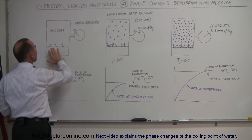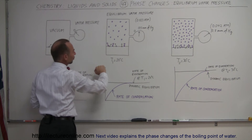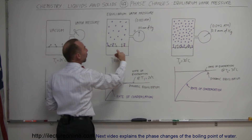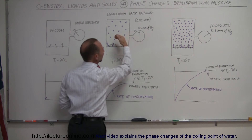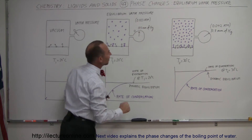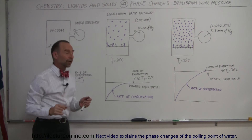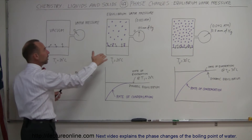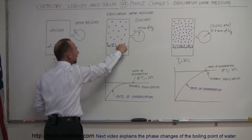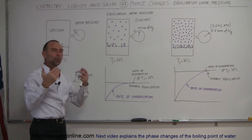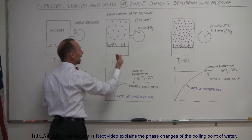So what happens is, once there are some molecules in the area above the water, exerting a vapor pressure at 20 degrees centigrade, when we reach what we call equilibrium vapor pressure, the pressure of the water molecules now in the vapor state will be at 17.5 millimeters of mercury, which is about 2.3 percent of the atmospheric pressure. Once you start having some molecules up in this container, they begin to bounce around, and every once in a while a molecule will hit the water surface and recondense — rejoin the molecules that are there — and that is called condensation.